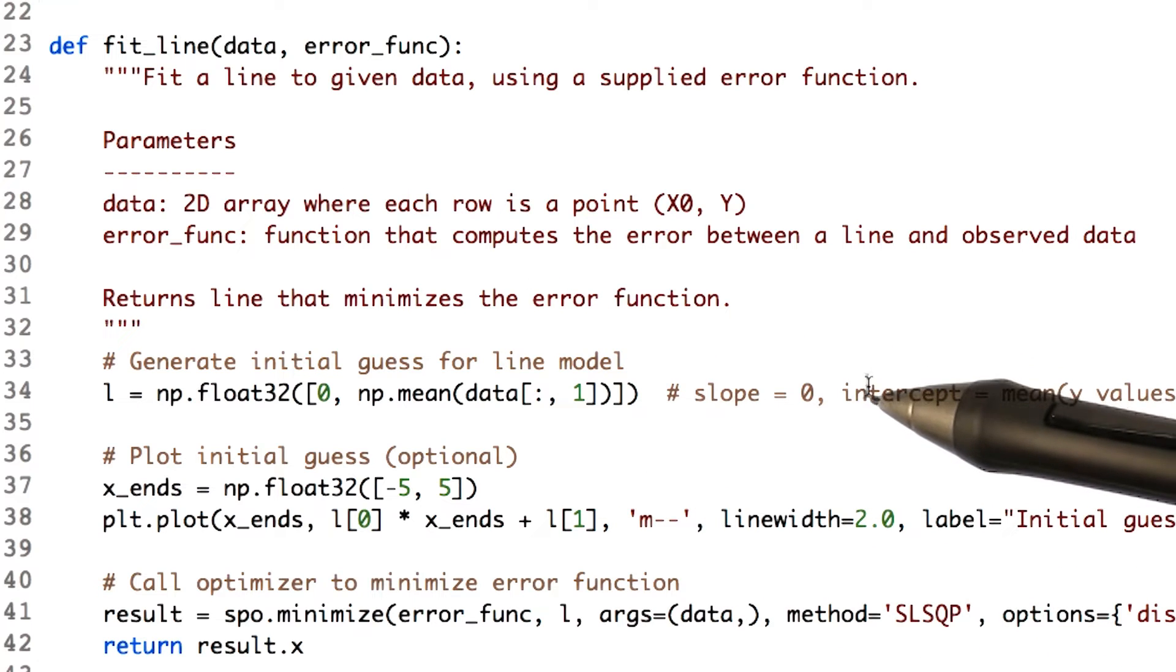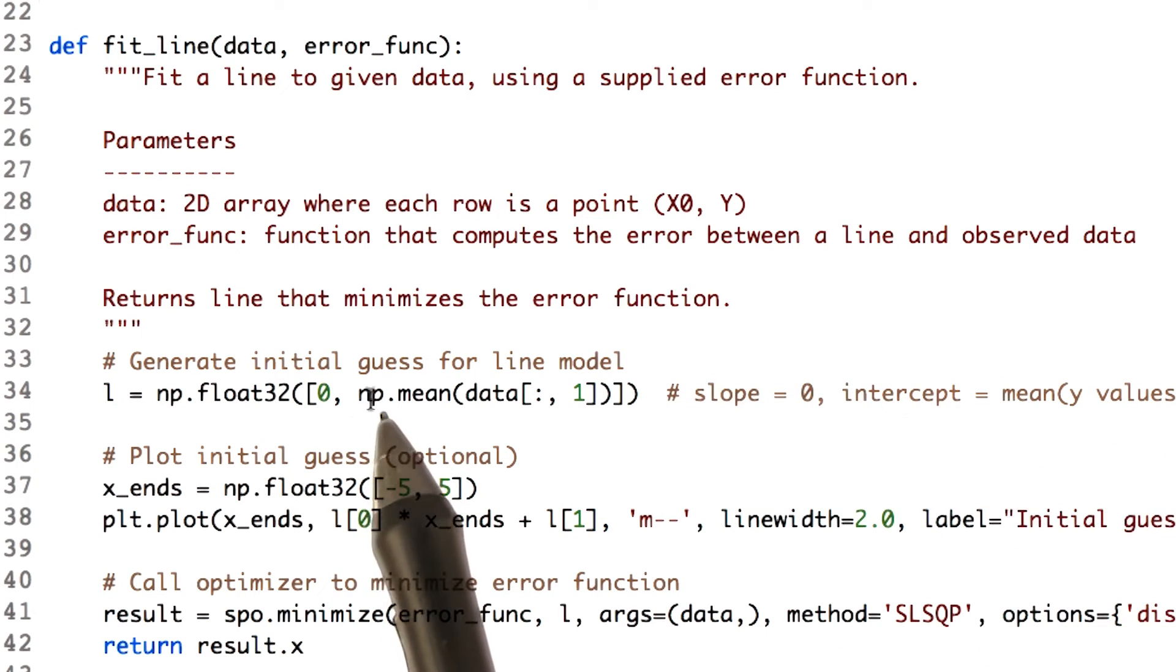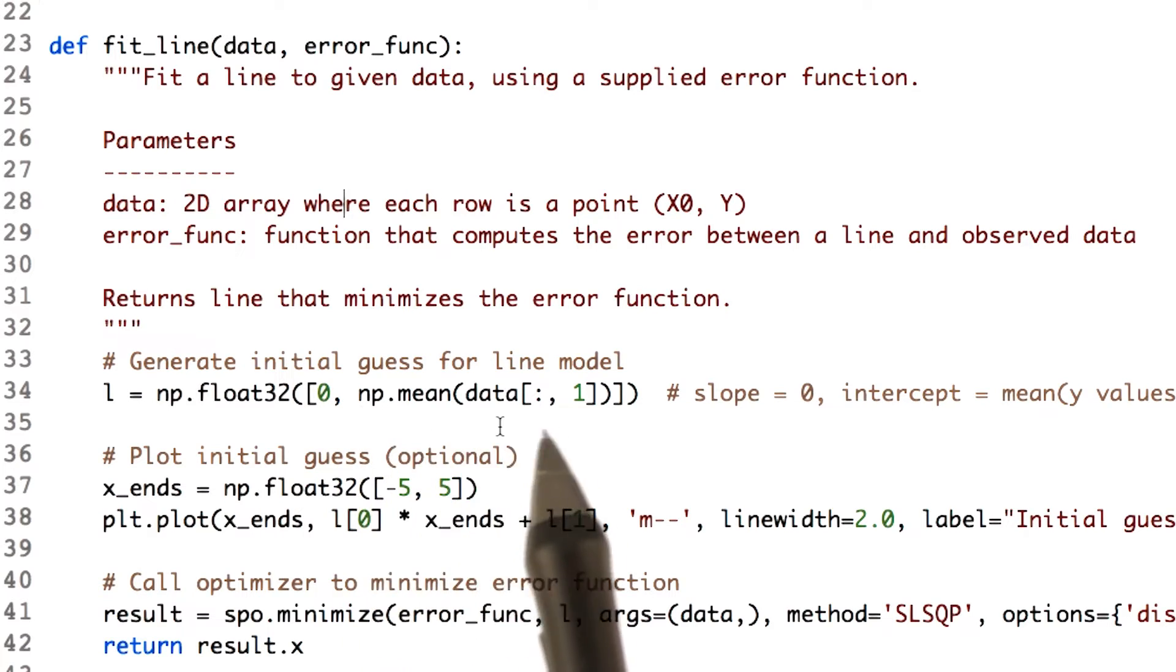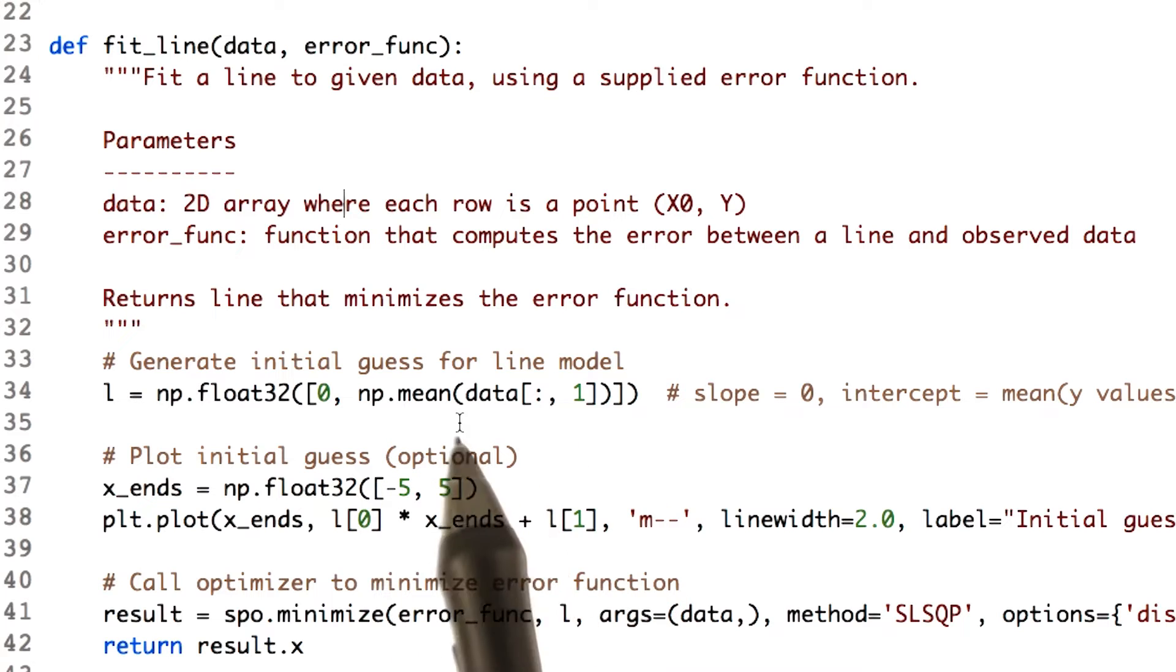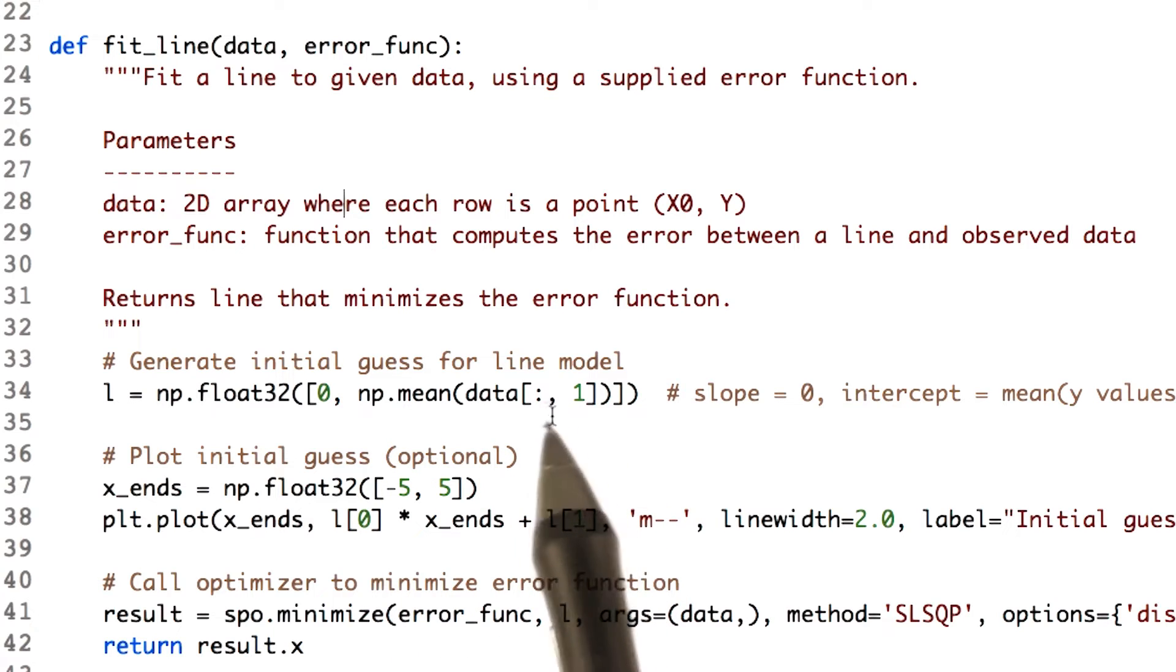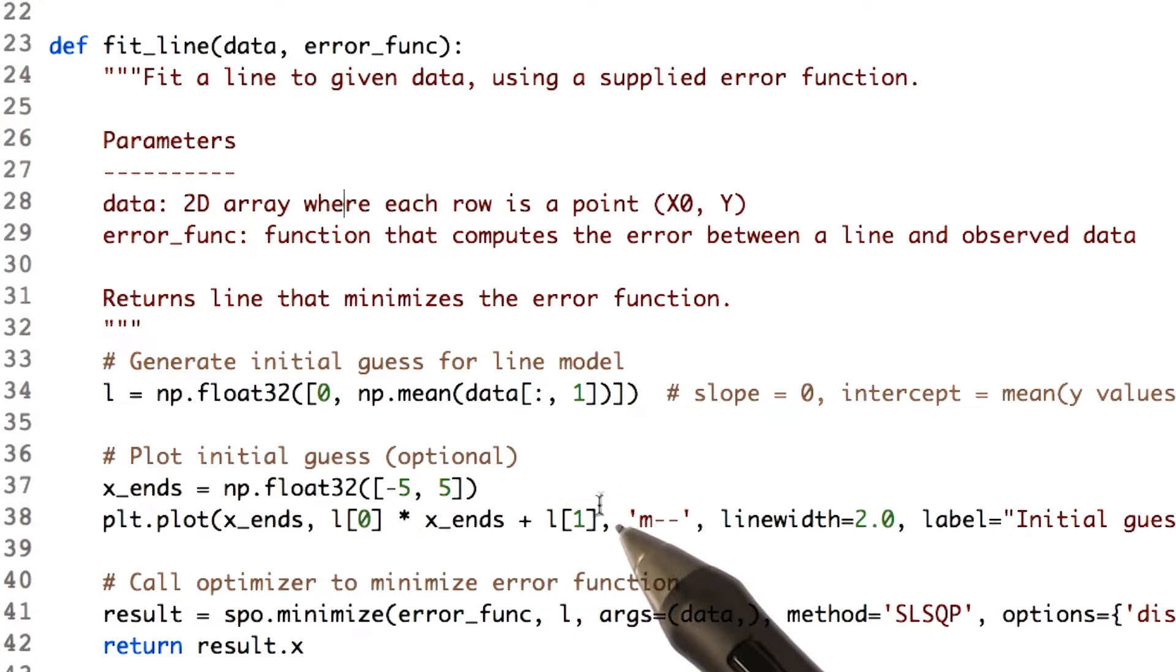But now we just follow the steps like we've talked about before. We start with an initial guess. Here our initial guess is a slope of zero and a mean of the rest of the data as our y-intercept. It could be anything really, but that is a reasonable guess. We plot the initial guess so we have something to look at.